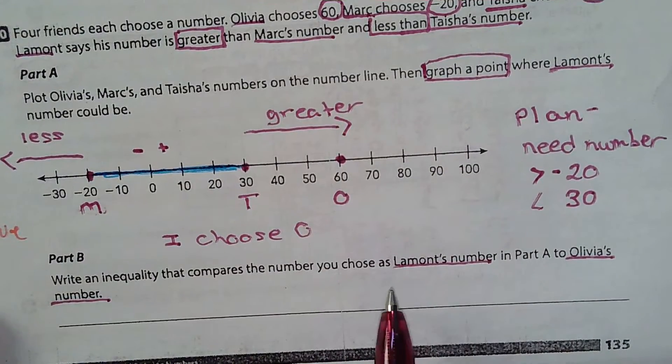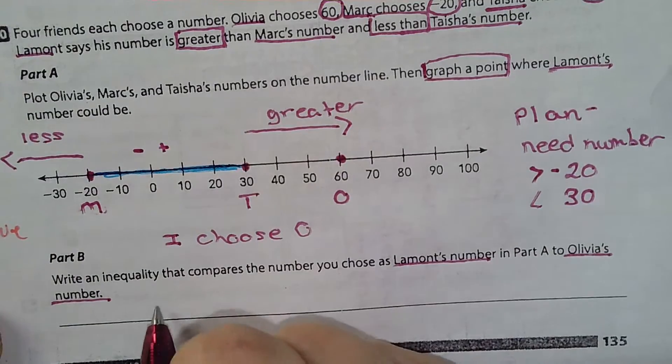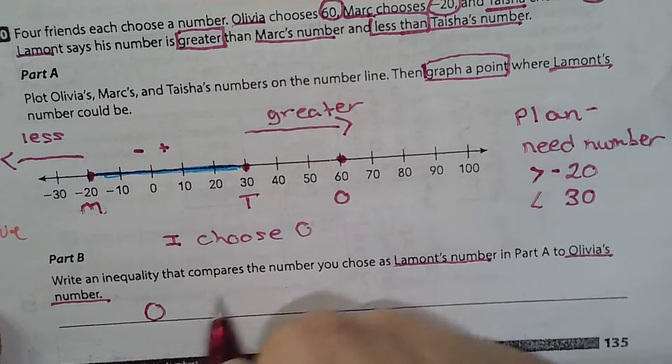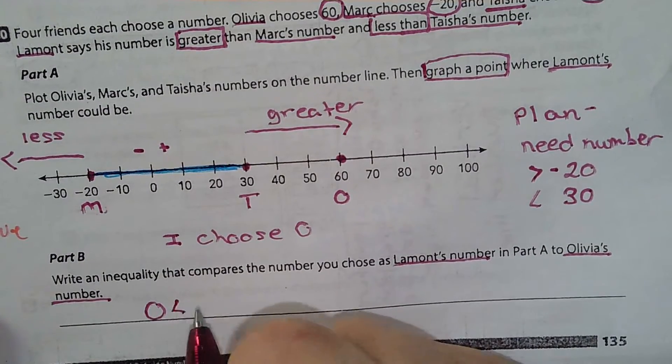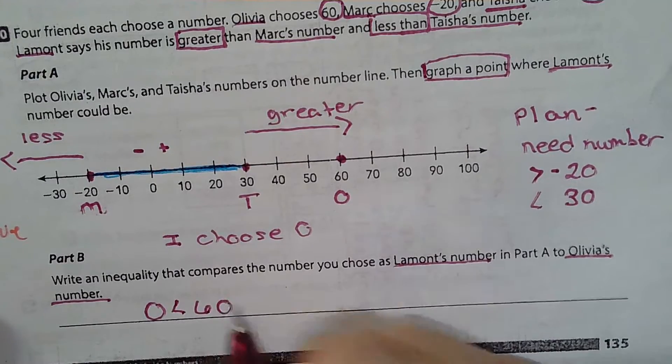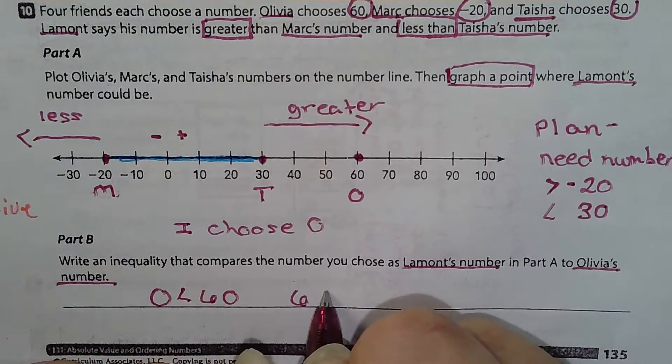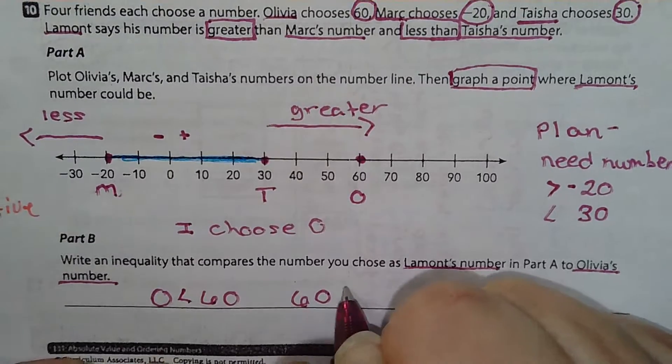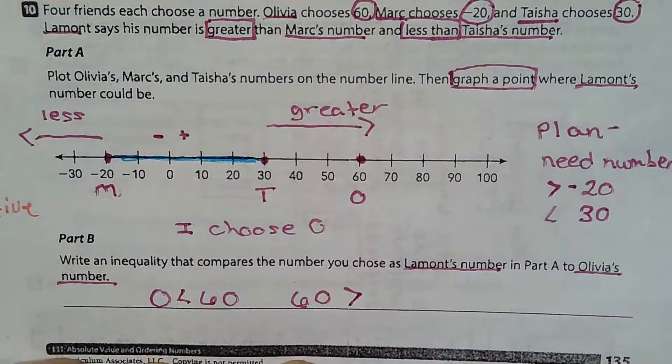Olivia's number is 60 and I chose zero, so zero is less than 60. I'm going to go ahead and do this one: 60 is greater than zero.